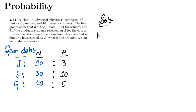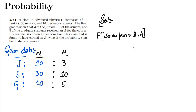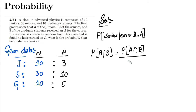I have to find out the probability that the student is a senior, given that he has earned grade A. Based on conditional probability, we know the formula: the probability of A given B equals the probability of A and B divided by the probability of B.